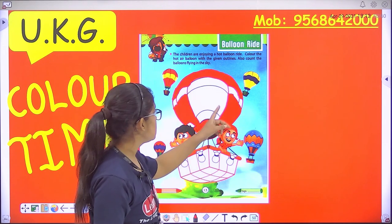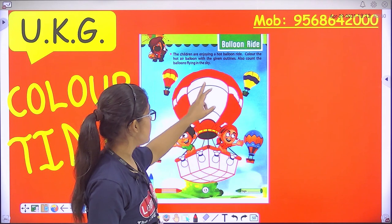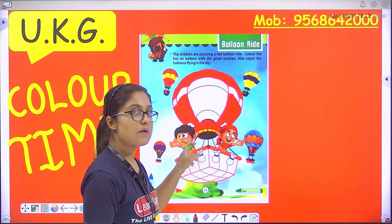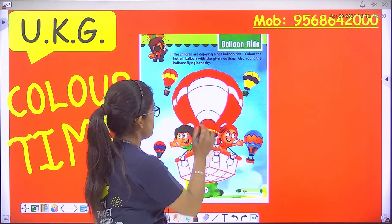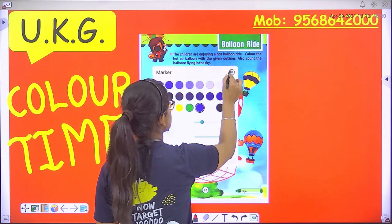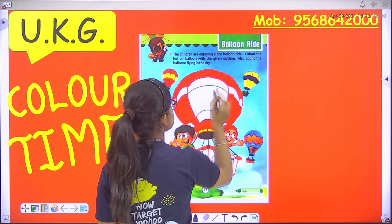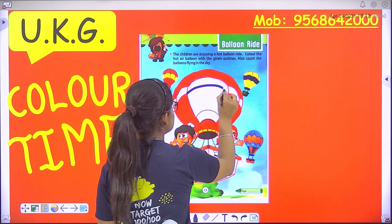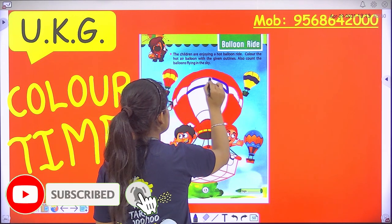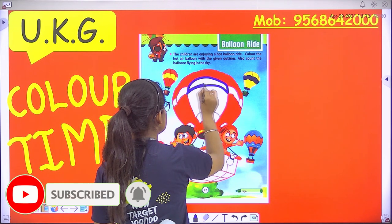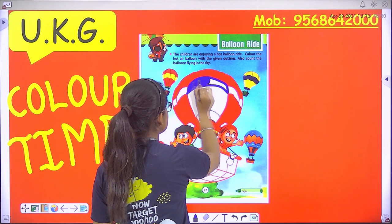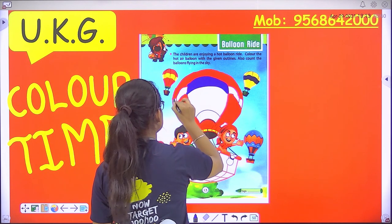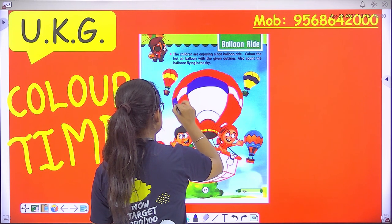Okay, so we have completed it. Now we will do it with red color — you can see it. Now we will do it with dark blue color.